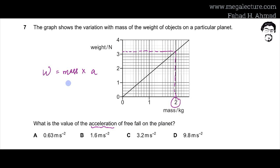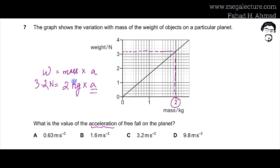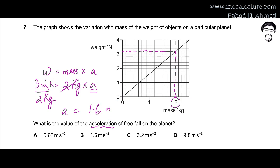Substituting into W = m × a: 3.2 = 2 × a, so a = 3.2 / 2 = 1.6 m/s². The acceleration due to free fall on this planet is 1.6 m/s², and the correct answer is option B.